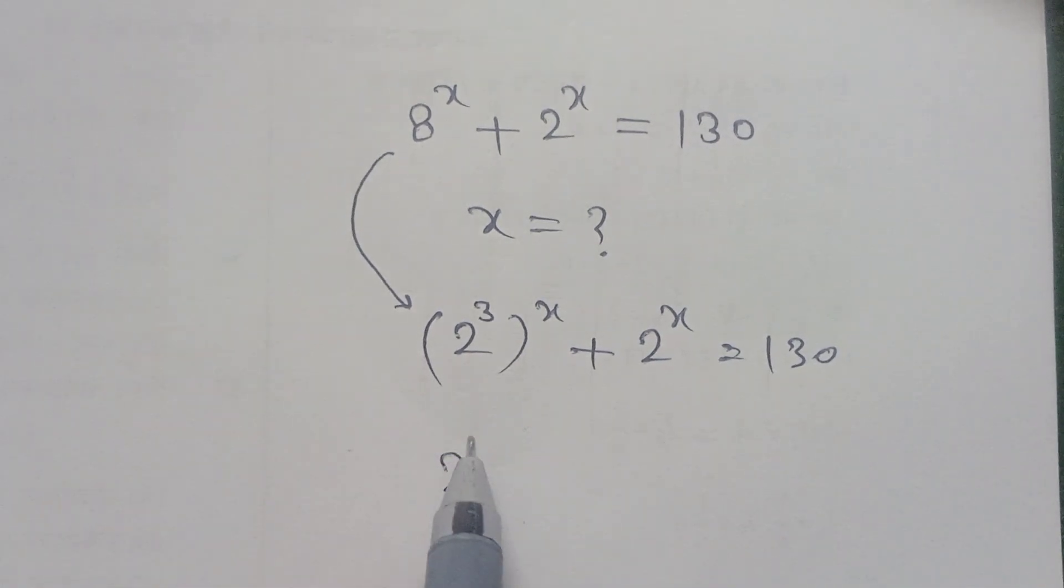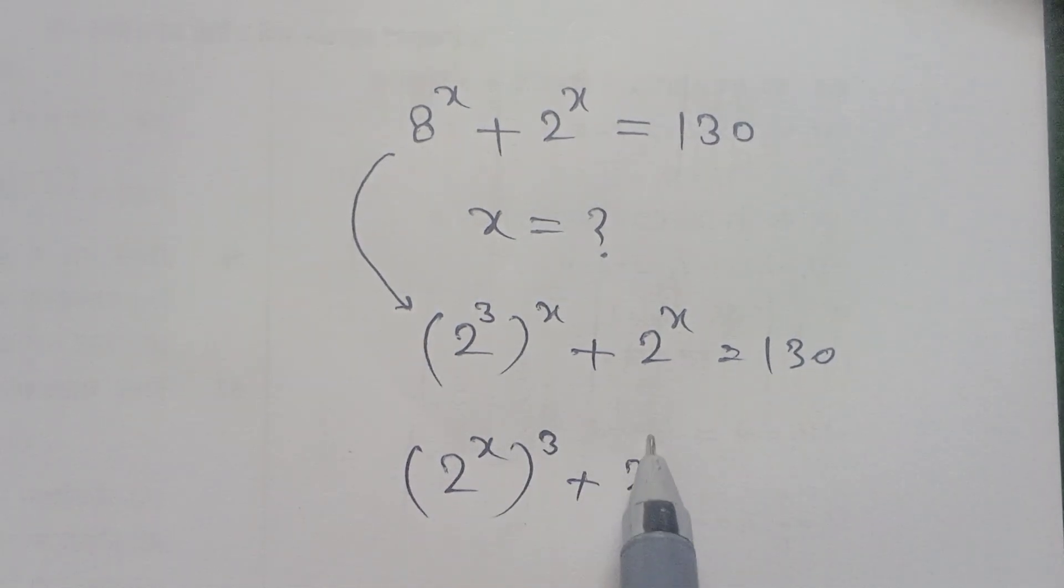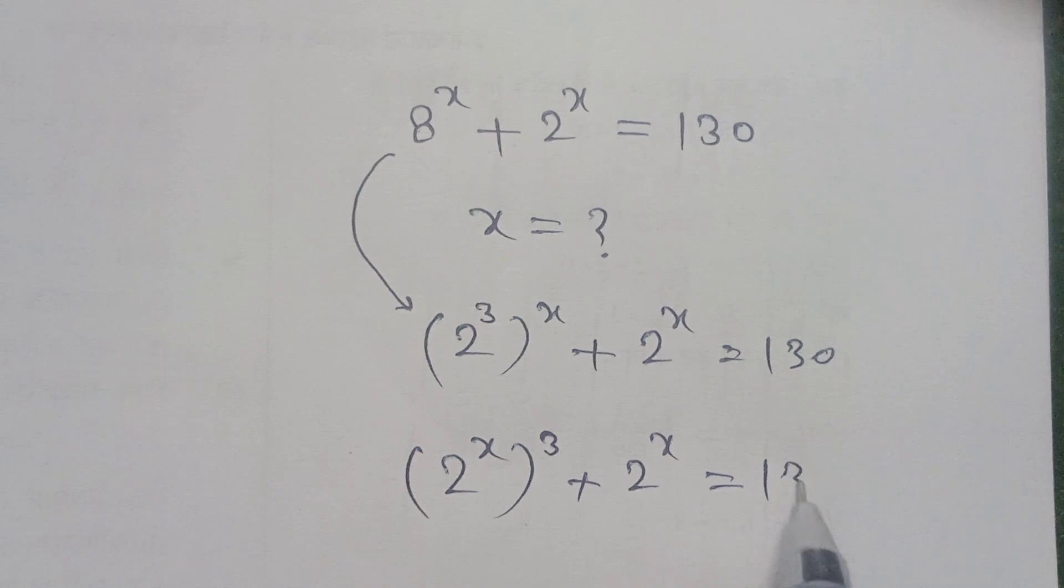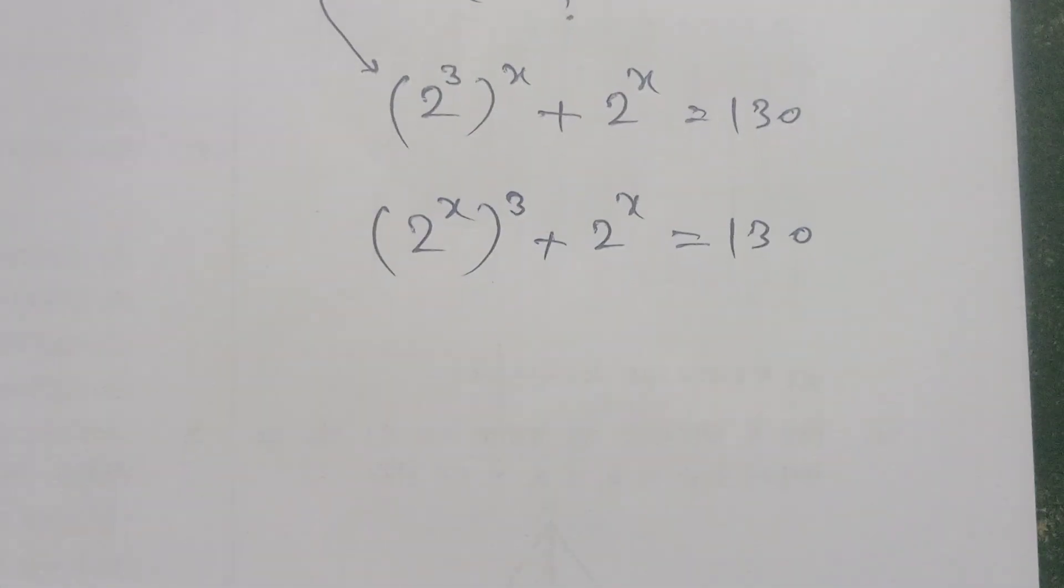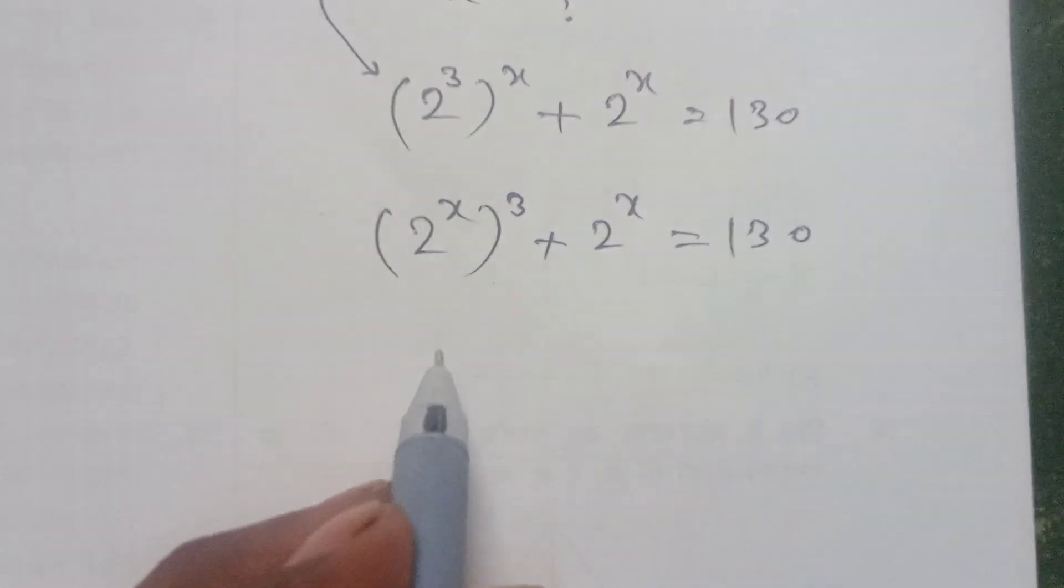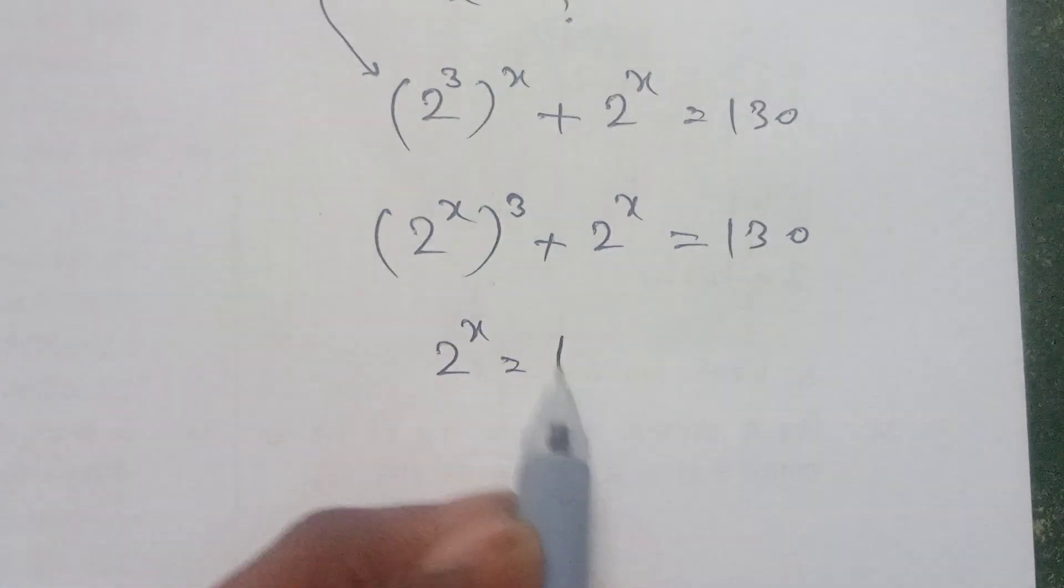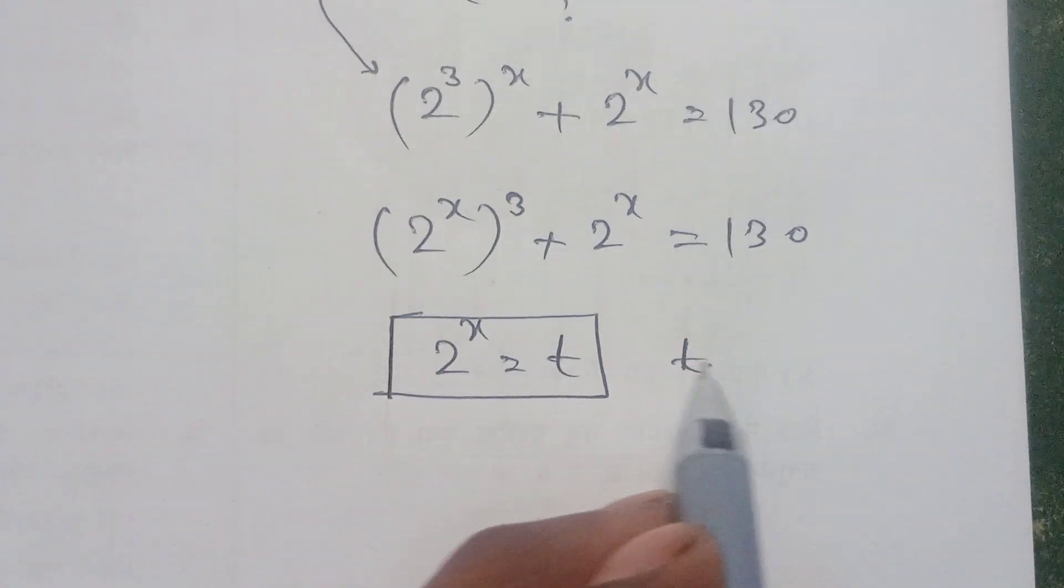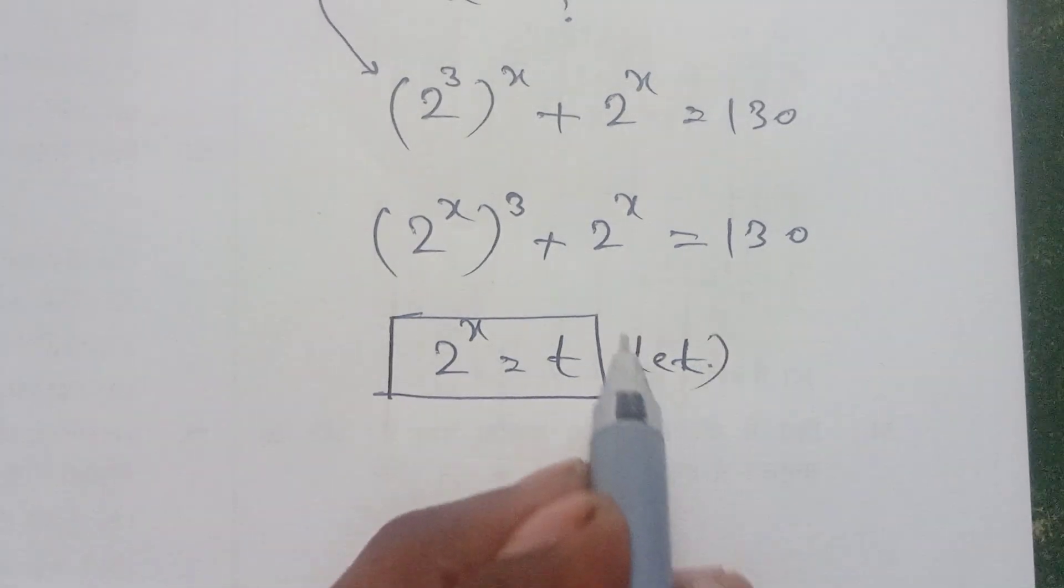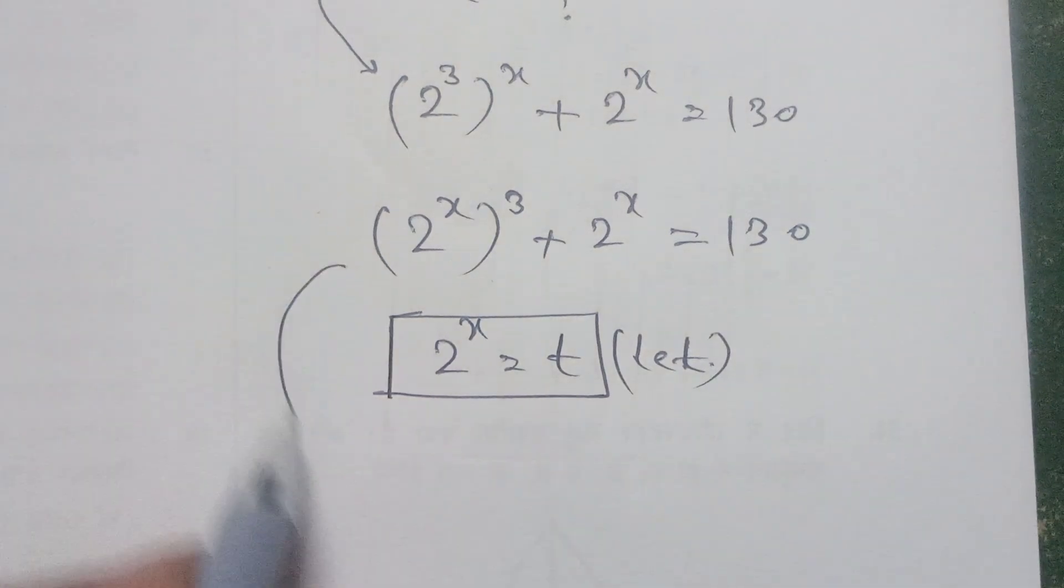And also we can write this as 2 to the power x times the quantity 2 to the power 3 plus 1 is equal to 130. Let 2 to the power x is equal to t.